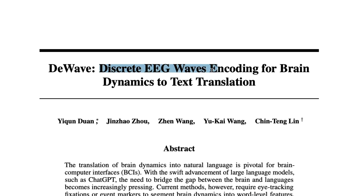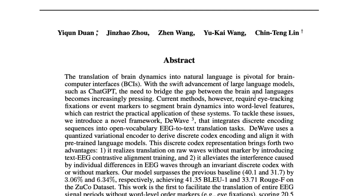Jumping directly into the paper — they are calling this D-Wave: Discrete EEG Waves Encoding for Brain Dynamics to Text Translation. The paper tackles a very important issue: instead of using an eye marker, they do directly EEG into text. D-Wave integrates discrete encoding sequences into open vocabulary EEG-to-text translation tasks.